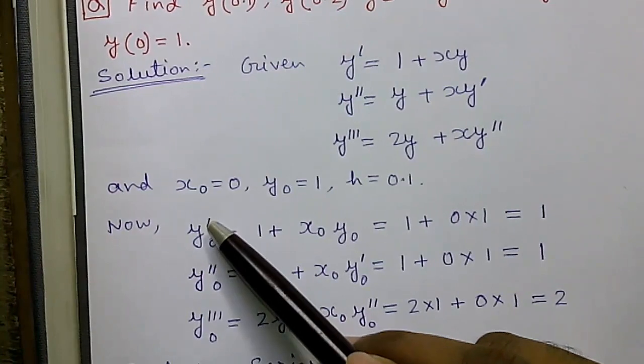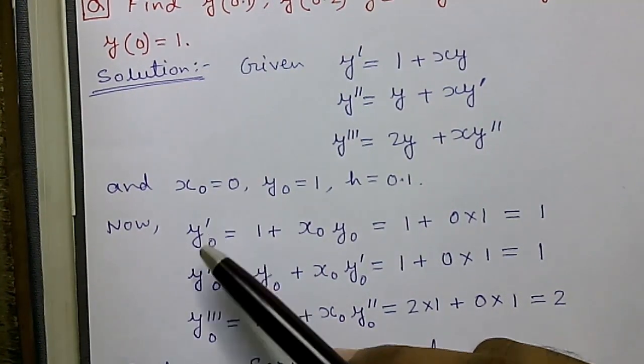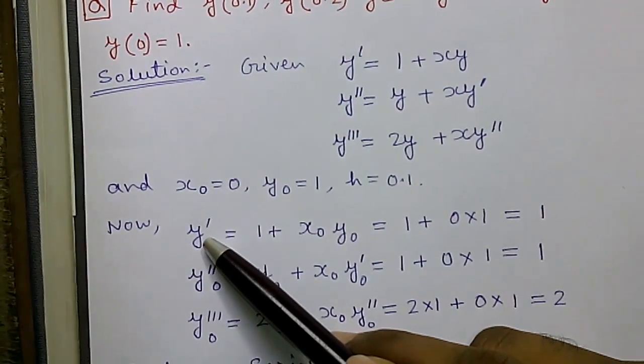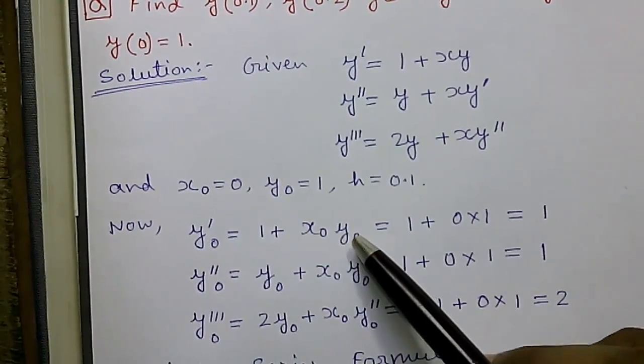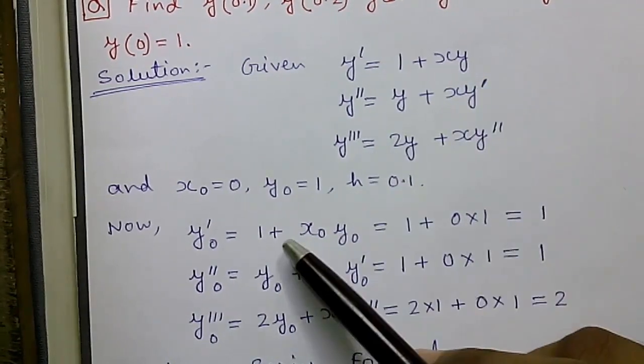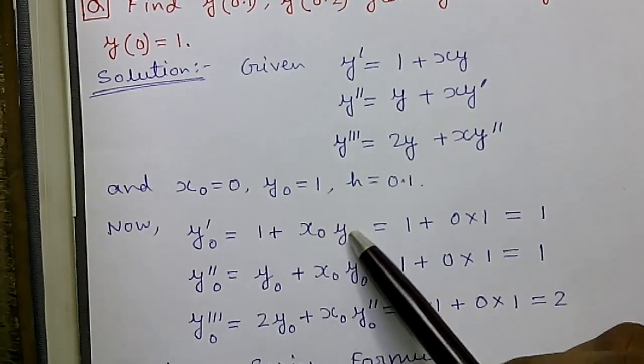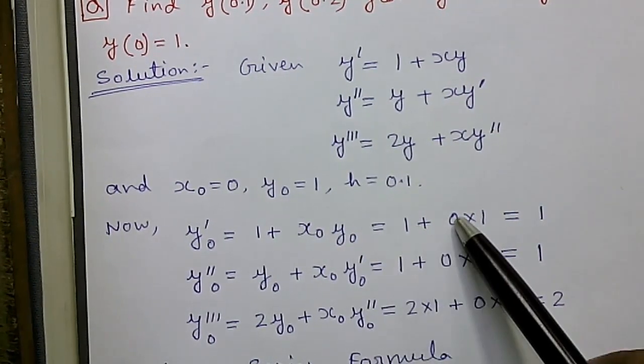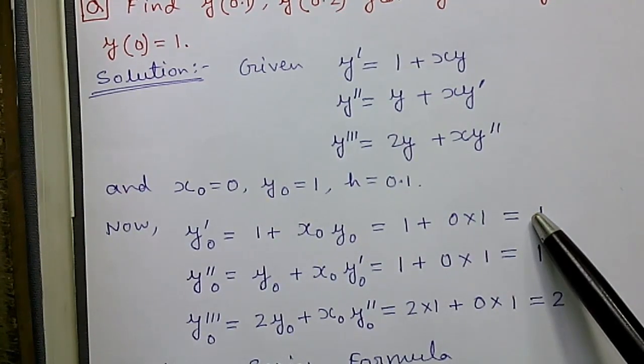Now we will calculate the y'0 value, our first set of values. And for y'0 value we will use x0 and y0 value. So y'0 = 1 + x0·y0. So that is 1 + 0·1 = 1.